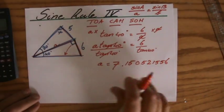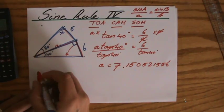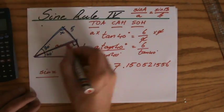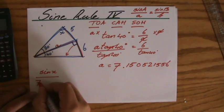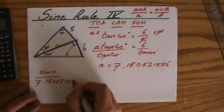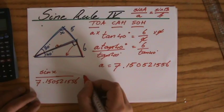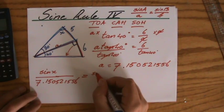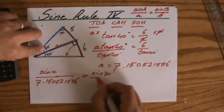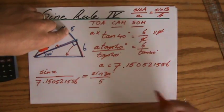But I can use the sine rule, because the sine of X, so I start with my unknown, over its teammate length, which is 7.150521556, equals the sine of any other angle - and they give me this one - over its teammate length.